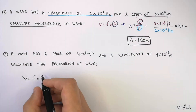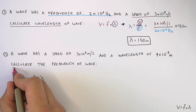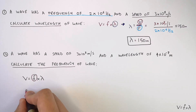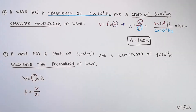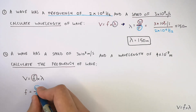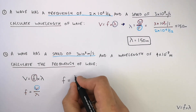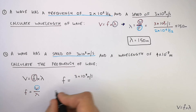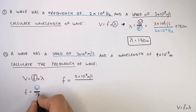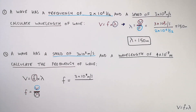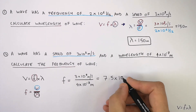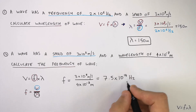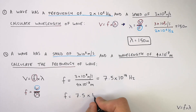Write V equals F times lambda. In this question we're calculating the frequency, so circle F and rearrange the equation to make F the subject: F equals V divided by lambda. Substitute in the numbers — the frequency equals the wave speed of 3×10⁸ meters per second divided by the wavelength of 4×10⁻⁷ meters. That gives a frequency of 7.5×10¹⁴ hertz.